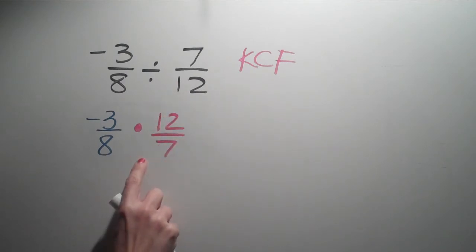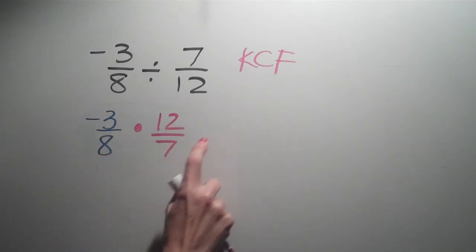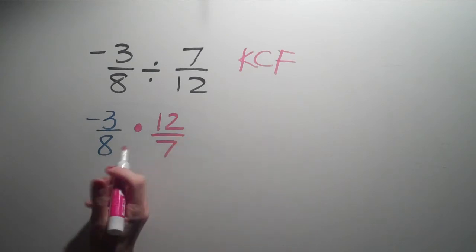And with multiplication, we either can multiply straight across and then reduce, or what's easier is to cross reduce.